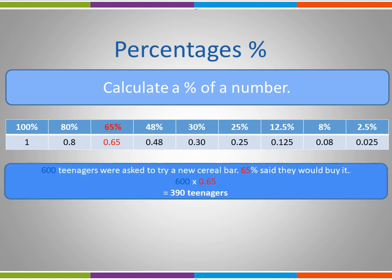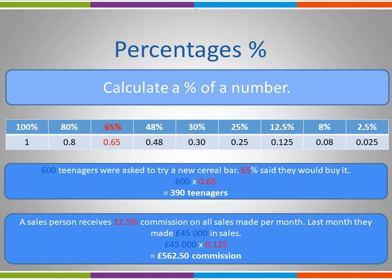Let's have a look at an example. 600 teenagers were asked to try a new cereal bar. 65% said they would buy it. So we take the original number 600 and multiply it by 0.65. We get the answer 390 — 390 teenagers have said they would buy the new cereal bar. We might use this as part of the analysis of our market research results. A second example: a salesperson receives 12.5% commission on all sales made per month. Last month they made £45,000 in sales. So we take the original figure, £45,000, and multiply it by 0.125. Our salesperson is going to receive £562.50 in commission. The important thing to remember is we multiply the original by 0.0 and then the percentage that we wish to calculate.